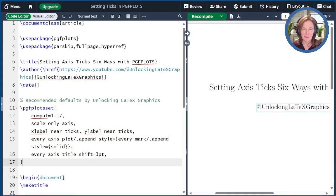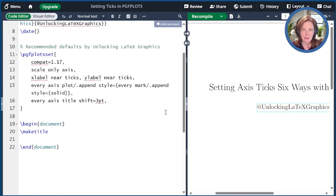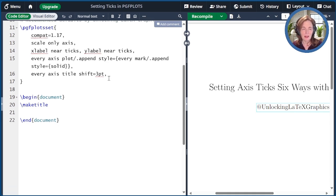I've already created a starting point for us with this document preamble. We're using the package pgfplots, which is of course essential. Parskip and full page are just to make things look nice, and HyperRef is so that I can link the author name back to the YouTube channel. The settings here are my recommended defaults for all documents that use PGF plots. I'll link back to the episodes that explain these in the show notes. I'm also going to specify a few options for today's episode.